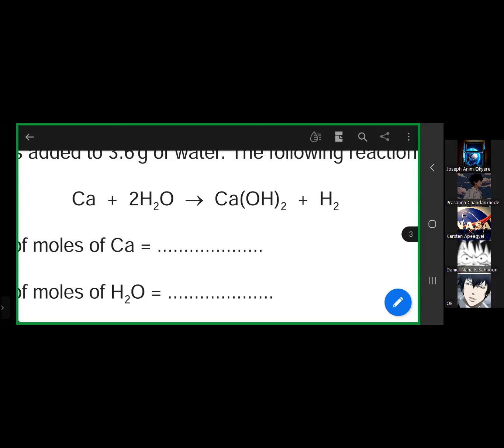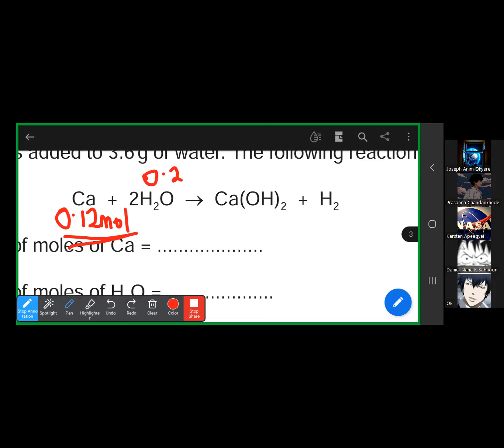Go for understanding. The moles of calcium is 0.12. That is the calcium available for the reaction. However, not all 0.12 was used up because it is in excess. When water finishes, the reaction cannot continue. All the 0.2 moles of water were used up. Water will determine the amount of calcium that must be used. If I use all the 0.2, how much calcium do I need for the reaction?